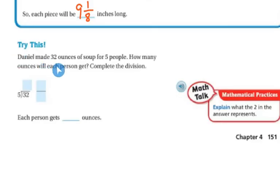So try this. Daniel made 32 ounces of soup for five people. How many ounces will each person get? Complete the division. Well, five can go into 32. Let's see. Five times six is 30. Five times seven is 35. So it's going to have to be six.